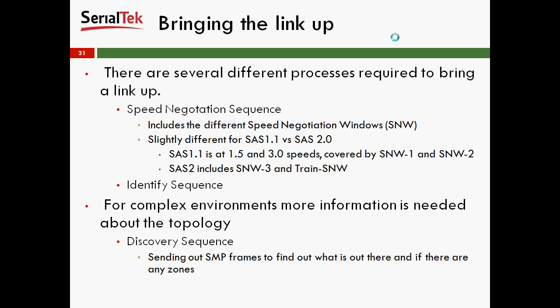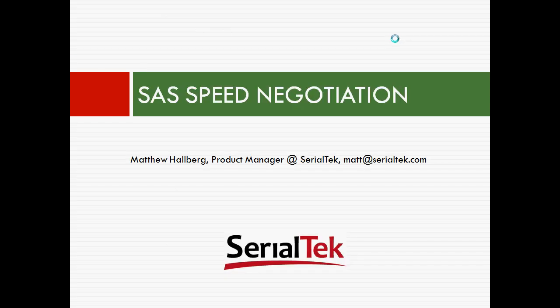In terms of bringing the link up, there are several different processes required. There's a speed negotiation sequence, which includes different speed negotiation windows (SNW), slightly different for SAS 1.1 versus SAS 2.0. SAS 1.1 operates at 1.5 and 3 gig speeds, covered by SNW 1 and SNW 2, and SAS 2 includes SNW 3 and Train SNW. There's also an identify sequence. For complex environments, more information is needed about the topology, so a discovery sequence goes out, sending SMP frames to find what is out there and if there are any zones. That ends this section on introductory terms for SAS. Our next section will be covering SAS Speed Negotiation. Thank you for your time.